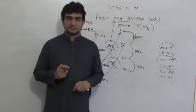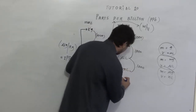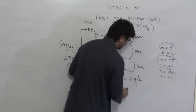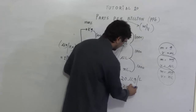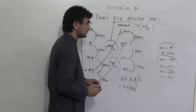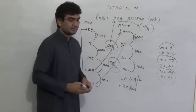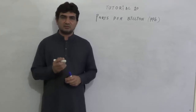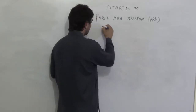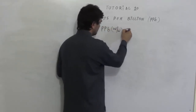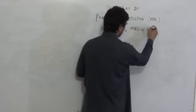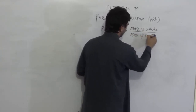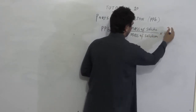For example, if we have a solution with 20 micrograms per litre, then it will be equal to 20 parts per billion, because microgram per litre equals parts per billion. The formulas used to calculate parts per billion concentrations are as follows.